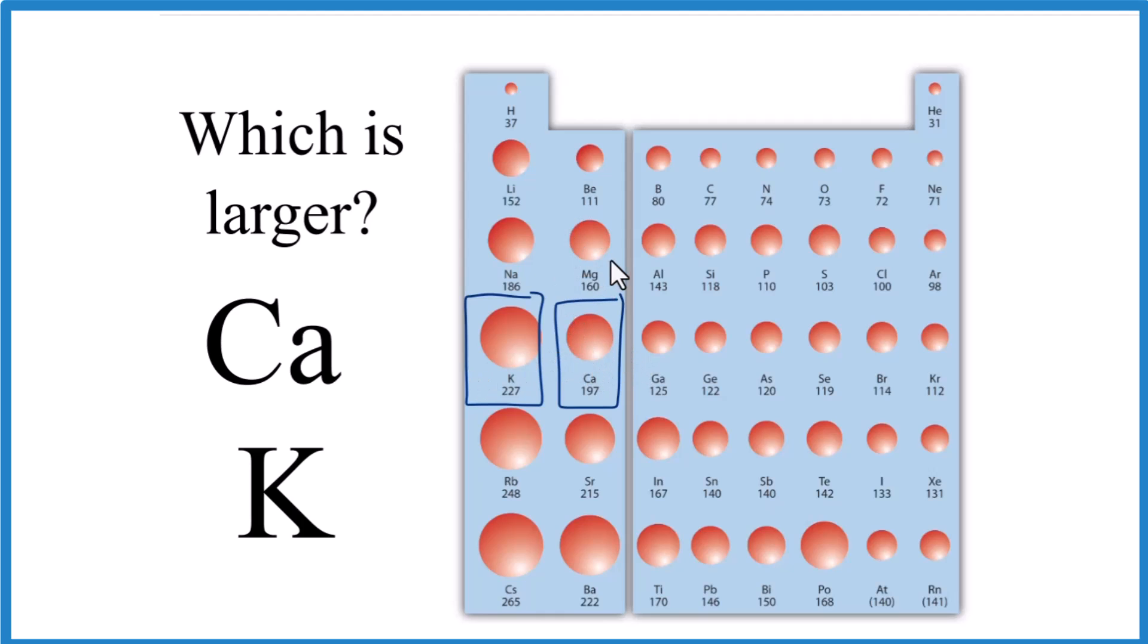So the trend for atomic radius on the periodic table: you go down groups, the atoms get bigger. Then when you go across periods or rows, they get smaller.